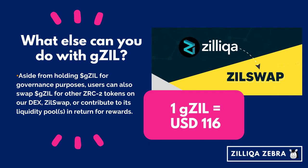Aside from holding GZILs for governance purposes, users can also swap GZIL for other ZRC2 tokens on the decentralized exchange ZIL swap, or contribute to its liquidity pool in return for rewards. As of 18 February 2021, one GZIL is worth roughly about US$116, so you can tell that it is pretty valuable.